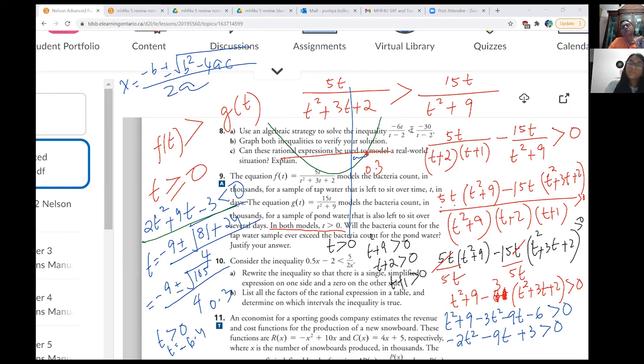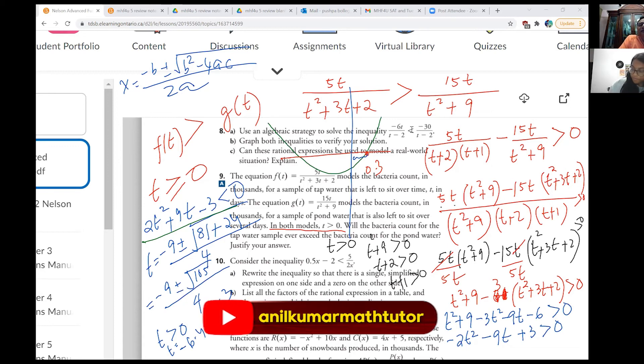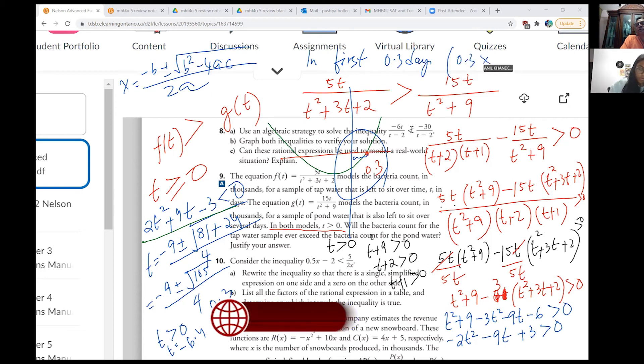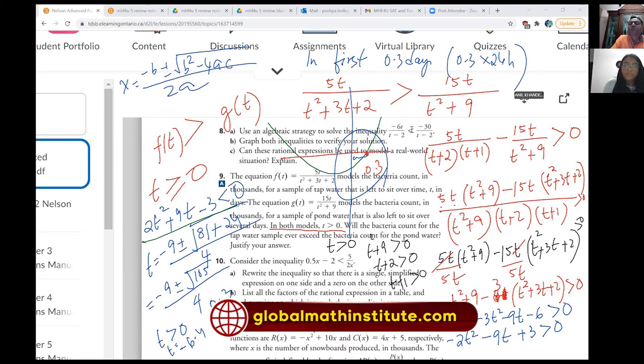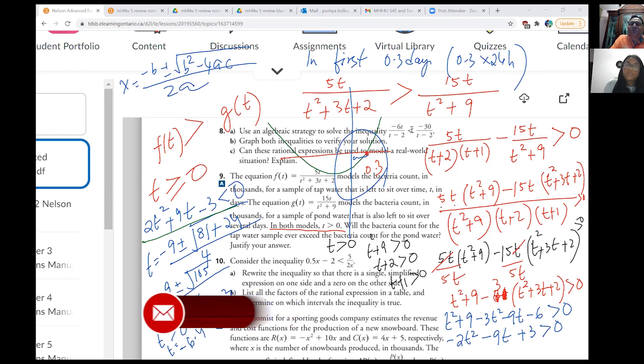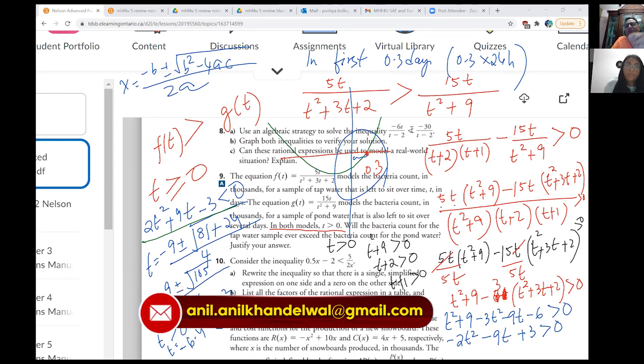Okay. So this inequality is true only for a very short duration of time, and that is 0.3 days. So you can say in hours, so 0.3 times 24. Do you see that? So, so many hours. It is the bacteria count in the tap water is more than the bacteria count in the pond. Okay. Yeah. So that is what we have. So in first 0.3 days, you can convert to hours, right? 0.3 into 24 hours, correct? So which is 7.2, let's say 7 hours.